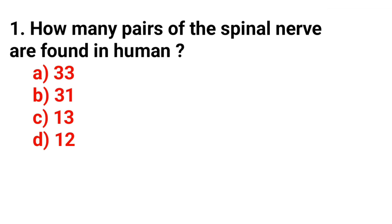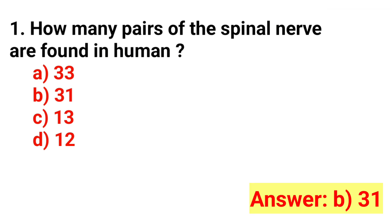Question number 1. How many pairs of spinal nerves are found in humans? Option A: 33. Option B: 31. Option C: 13. Option D: 12. The answer is option B: 31.